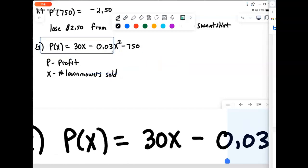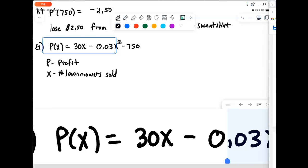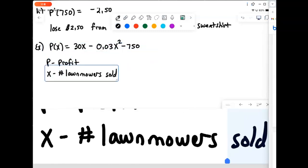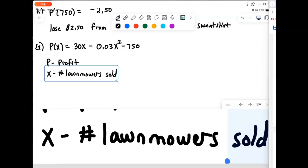Okay, so this problem. Once again we're given a function here for profit: P(x) equals 30x minus 0.03x squared minus 750. And we're told that P is the profit and x is the number of lawnmowers sold.